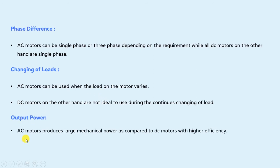Output power: AC motors produce a large mechanical power as compared to DC motors with a higher efficiency. So we can say that AC motors produce a large output power as compared to DC motors.